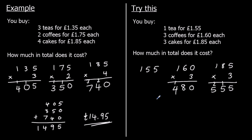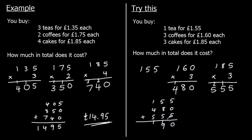So we've got to add up £1.55, £4.80, and £5.55. Five plus five is ten — zero and carry one. Five plus five plus eight plus one is nineteen — nine in the tens carry one. One plus four plus five plus one is eleven. So that's 1,190p, or £11.90.